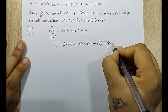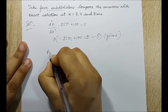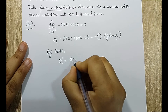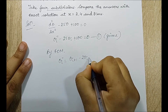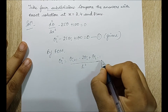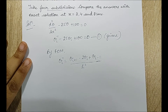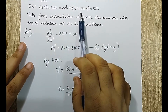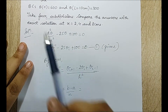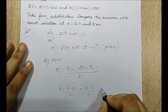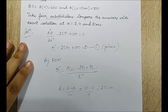By FDM, we know the formula for theta_i double dash. For h, the formula is b minus a upon n. Here the domain goes from 0 to 10 centimeters, so h equals 10 minus 0 upon 4, which gives h equal to 2.5 centimeters.